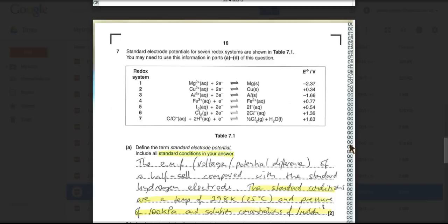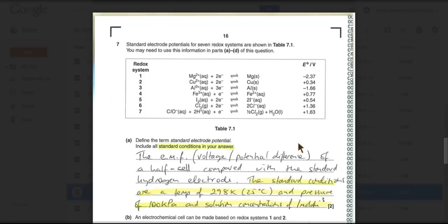So that's the EMF or the voltage or the potential difference, any of those, of a half cell compared with the standard hydrogen electrode. The standard conditions thereafter are temperature is 298 Kelvin or 25 Celsius, pressure of 100 kilopascals, and all solution concentrations must be 1 moles per decimetre cubed.